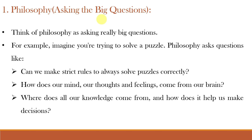The first field is Philosophy, which means asking the big questions. Philosophy asks fundamental questions about existence, knowledge and ethics. In the context of Artificial Intelligence, philosophical inquiries seek insight into the nature of reasoning, consciousness and decision-making. By examining philosophical concepts, AI researchers can gain insights into how to create intelligent systems that copy human reasoning. For example, when solving a puzzle, philosophy may ask: can we make strict rules to solve puzzles correctly? How do our thoughts and feelings come from our brain? Where does our knowledge come from, and how does it help us make decisions?